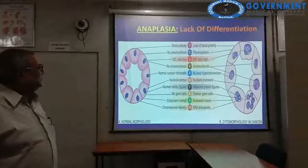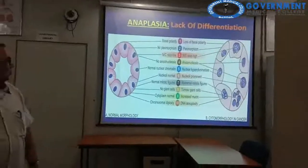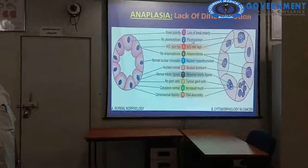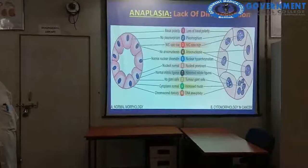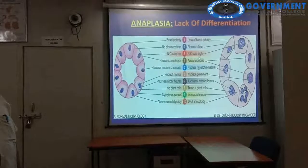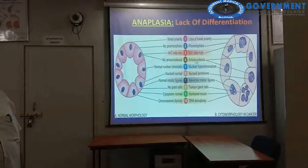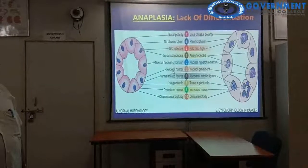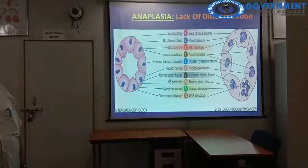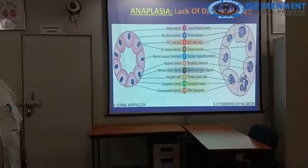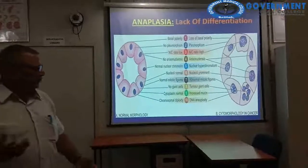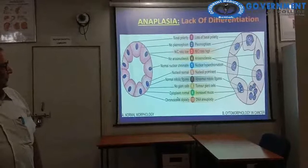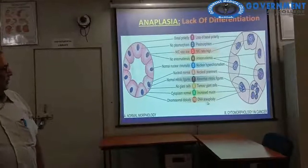Anaplasia — lack of differentiation — features include: loss of basal polarity; pleomorphism present; increased nuclear-cytoplasmic ratio; anisokaryosis (variation in nuclear size); hyperchromatic nuclei; prominent nucleolus; abnormal and increased mitotic figures; tumour giant cells present; cytoplasmic inclusions present; and chromosomal aneuploidy (compared to normal diploidy).